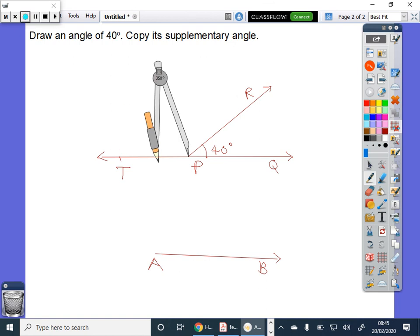Draw an arc which should intersect at PT and PQ. Now, let this, in the second figure, we can write it as M and N.